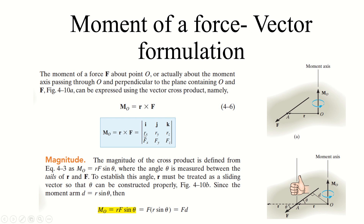r cross F means you will write the r vector and F vector in the form of Cartesian coordinates x, y, and z, and then find the value of this determinant. You will get the answer in the form of moment about point O. This is the vector formulation that will be used in the upcoming example.